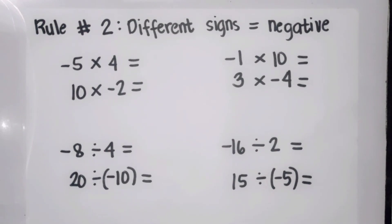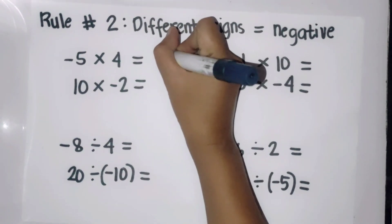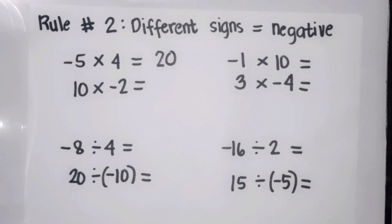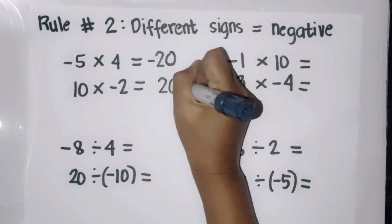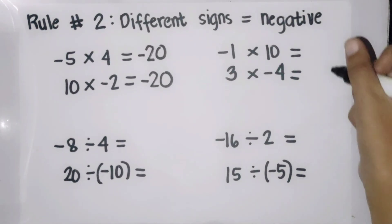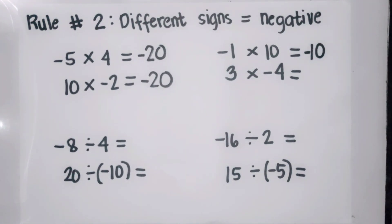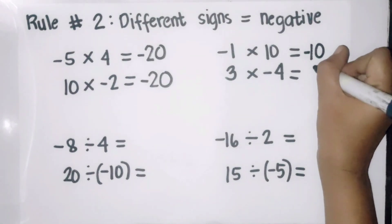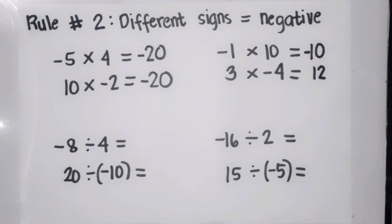Rule number two for multiplication and division: if the integers have different signs, the answer should be negative. Examples: negative five times four — five times four is twenty, and since the signs are different, the answer is negative twenty. Ten times negative two is also negative twenty. Negative one times ten: one times ten is ten — negative. Three times negative four: three times four is twelve — negative.